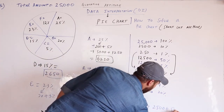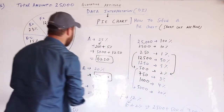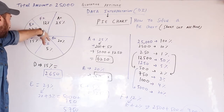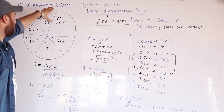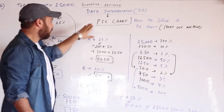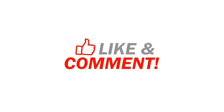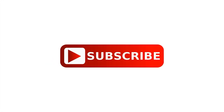So this is the total amount for all persons A, B, C, D, and F who spend out of 25,000. Hope you have enjoyed this lesson.